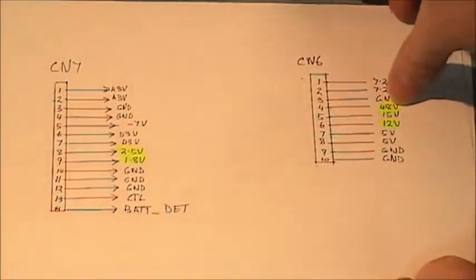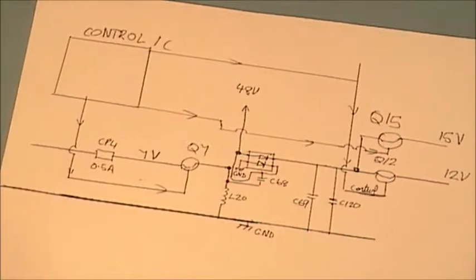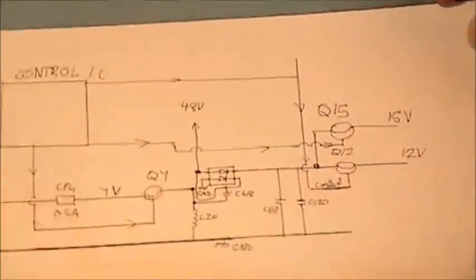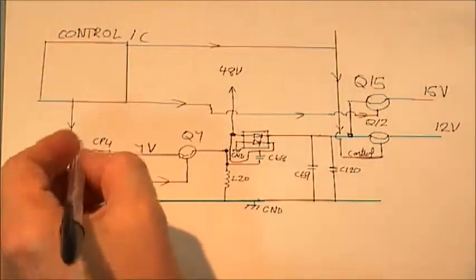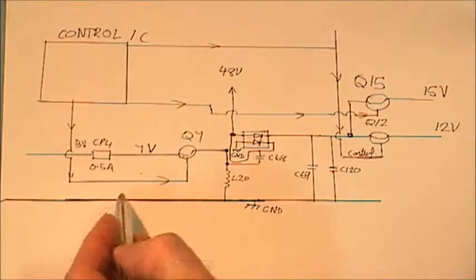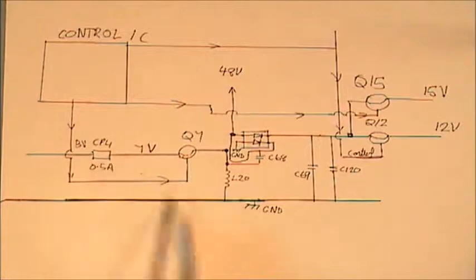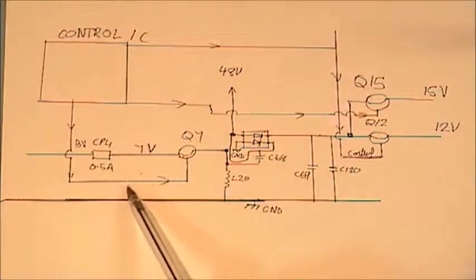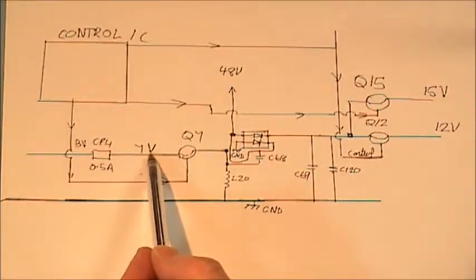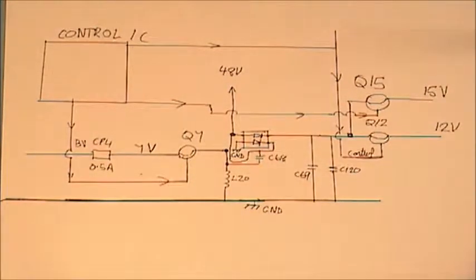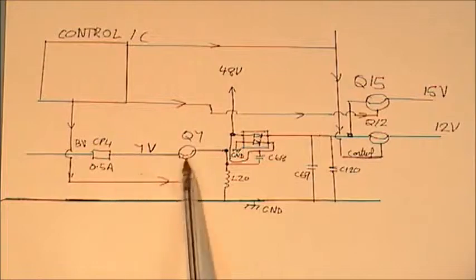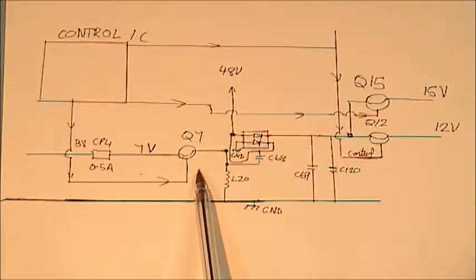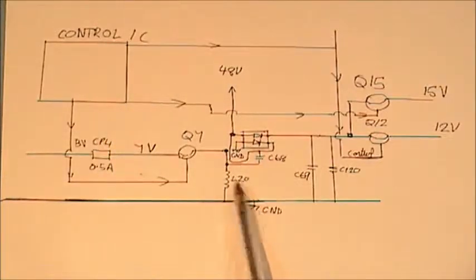I have just drawn out a small diagram of it. What we have in here coming in is your battery voltage, EV voltage, and it goes through your CP4, your connector. It's rated at a half an amp. And you get 7 volts, 7.2, 7.4, somewhere around that depending on the state of charge of the battery. It comes into this transistor Q7 which is controlled by this control IC on the power supply board.